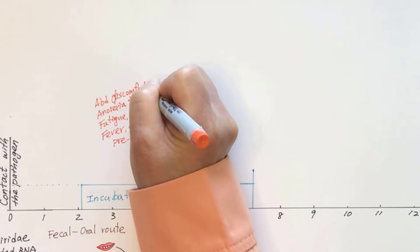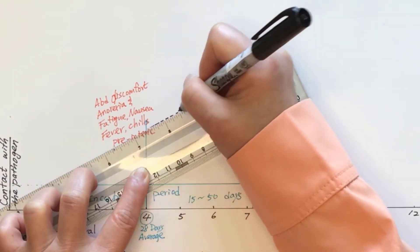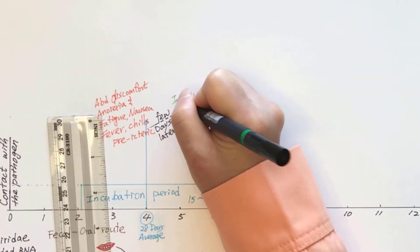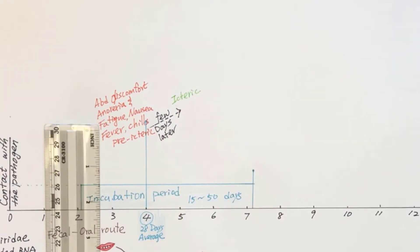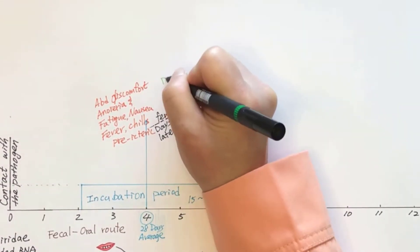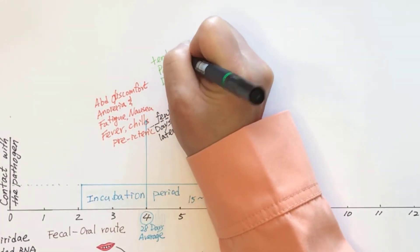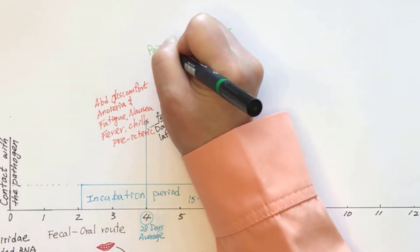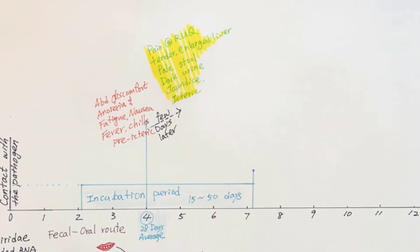and abdominal discomfort. In a few days to a week later, these symptoms progress to the icteric phase, during which the patient manifests jaundice, dark urine, pale stool, and a tender and enlarged liver with pain at the right upper quadrant.